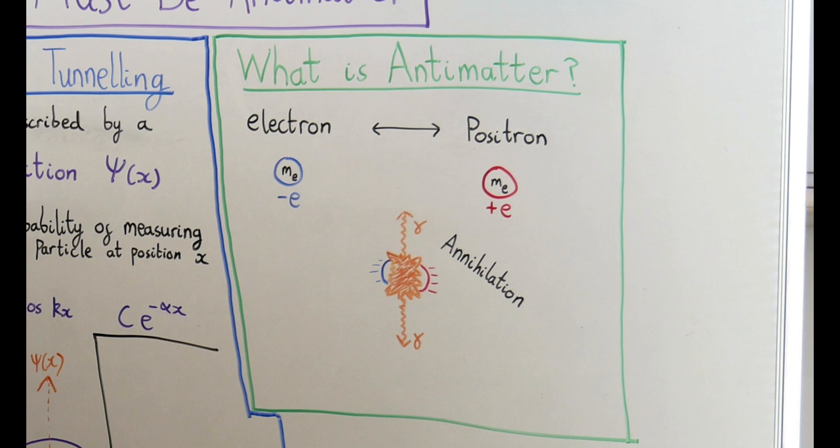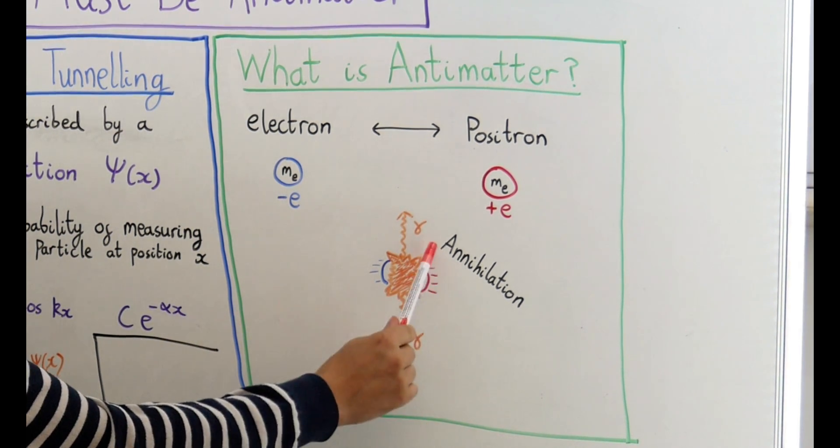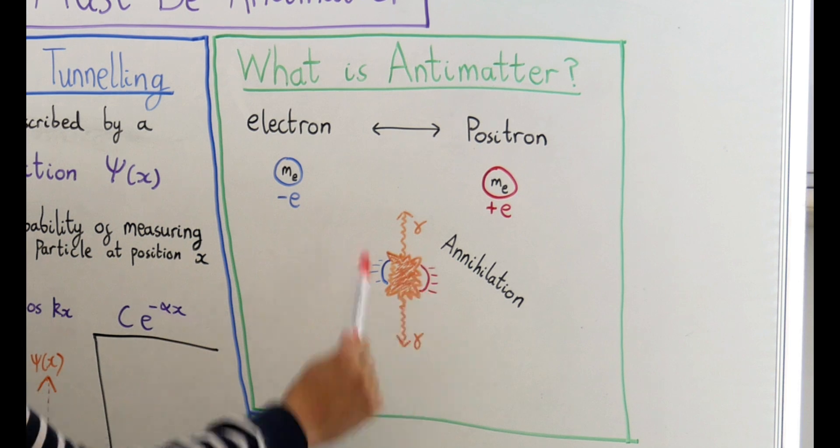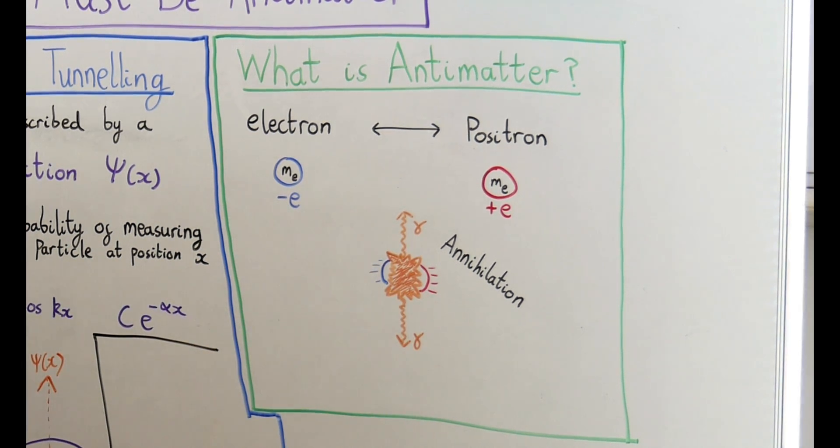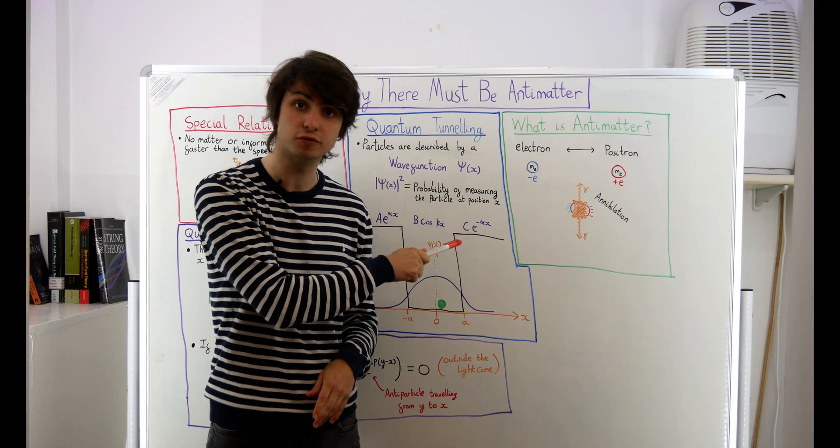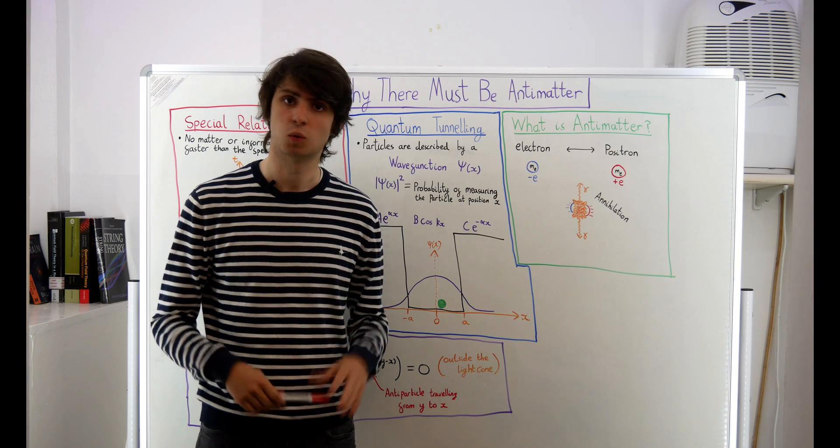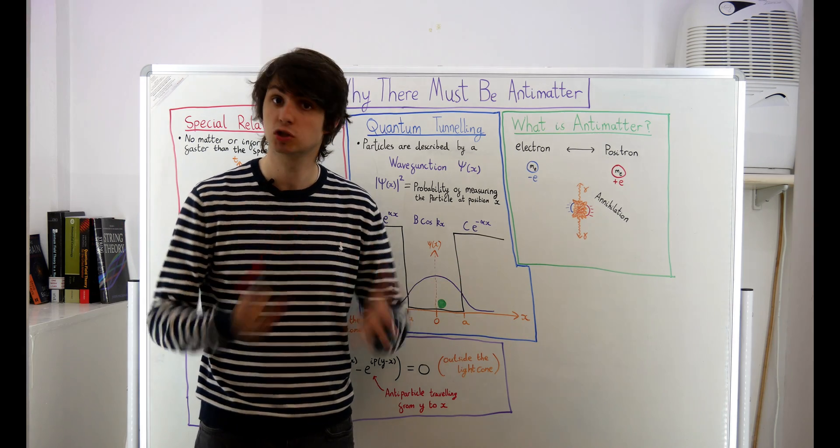The more bizarre thing about antimatter though is that if a particle meets its antiparticle the two will annihilate each other in a great big burst of energy. They're quite dramatic about being near one another. That's the quick overview of what antimatter is but it doesn't answer our main question. Why is there antimatter at all?